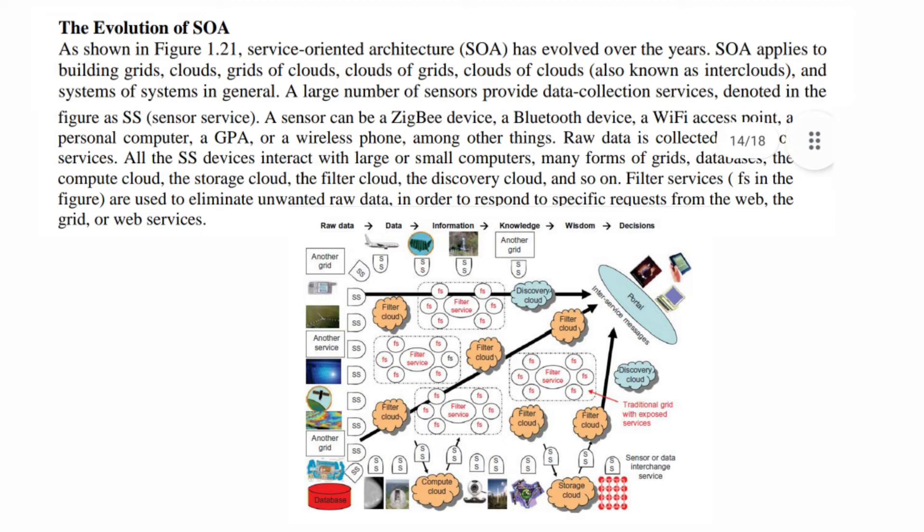The diagram shows clouds of clouds, grids, clouds of grids, grids of clouds, and systems of systems. A sensor can be a Zigbee device, a Bluetooth device, a WiFi access point, a personal computer, a GPR, or a wireless phone, among other things.